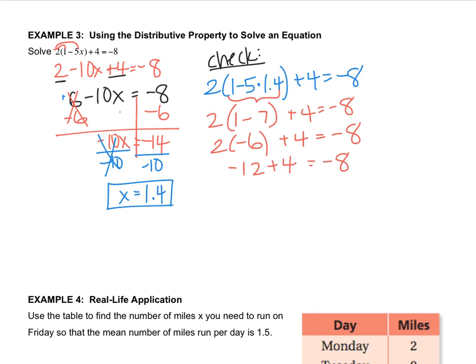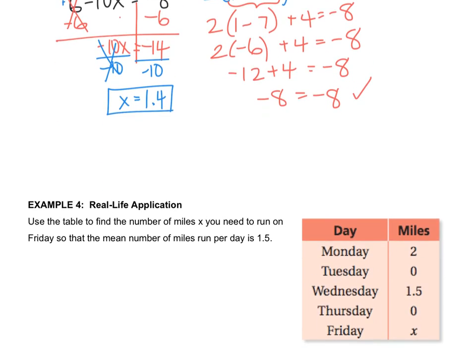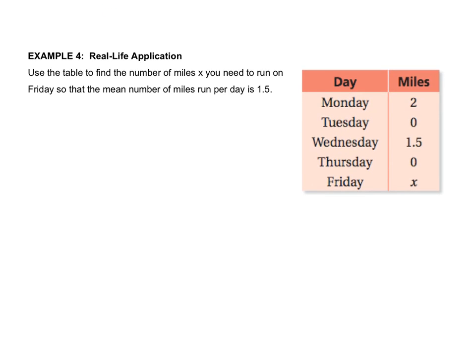And negative 12 plus 4. When the signs are different you subtract and take the sign of the larger number. So 12 minus 4 is 8 and the 12 was bigger. So like I said we're going to do more of these because I know they had a lot of little pieces where you could make a mistake. So we'll do more of these in class.